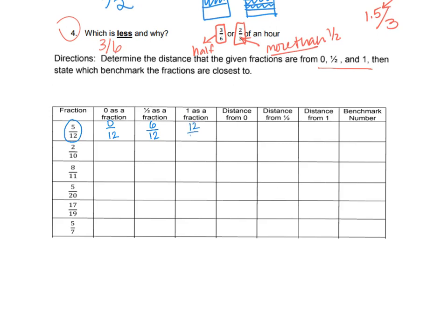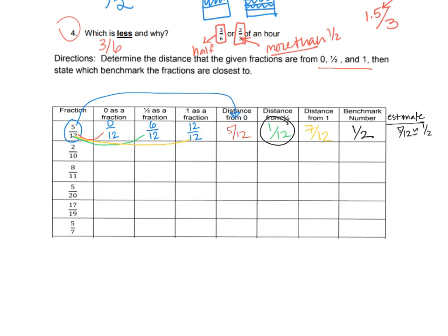Since 5/12 is only 1/12 away from one-half, its benchmark is one-half. So if asked to estimate 5/12, you'd say it's about one-half. That's the idea of benchmarks — using familiar numbers like zero, one-half, and one to estimate unfamiliar fractions.